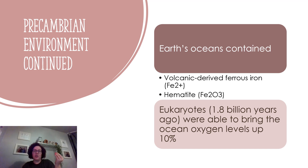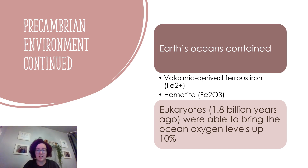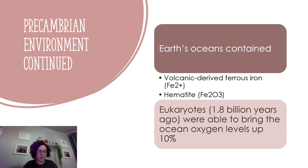The oceans started to contain volcanic-derived phosphorus, iron, and hematite. Because of all the photosynthesis happening, eukaryotes about 1.8 billion years ago were able to bring ocean oxygen levels up to 10 percent. Oxygen starting to fill our oceans is important because it stops the ocean looking really green and gross and starts turning it blue — and that then has an effect on our atmosphere.